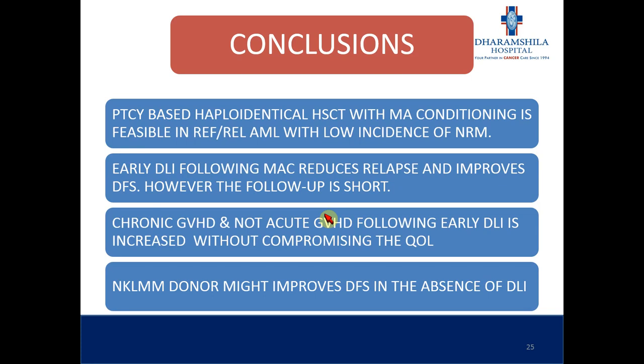I think we have time for maybe one or two questions. If I understand correctly, this is sort of an aggregate analysis of several serial independent trials. I'm wondering — have you looked at the individual characteristics of patients in each trial? Do they differ in important ways, such as stage of disease, treatment response, or burden of blasts?